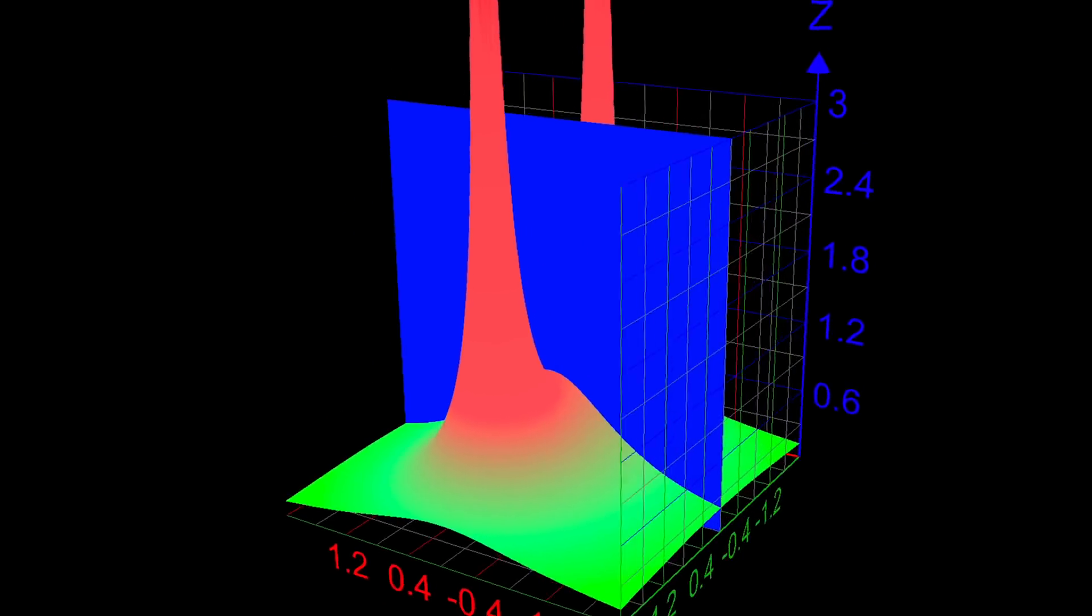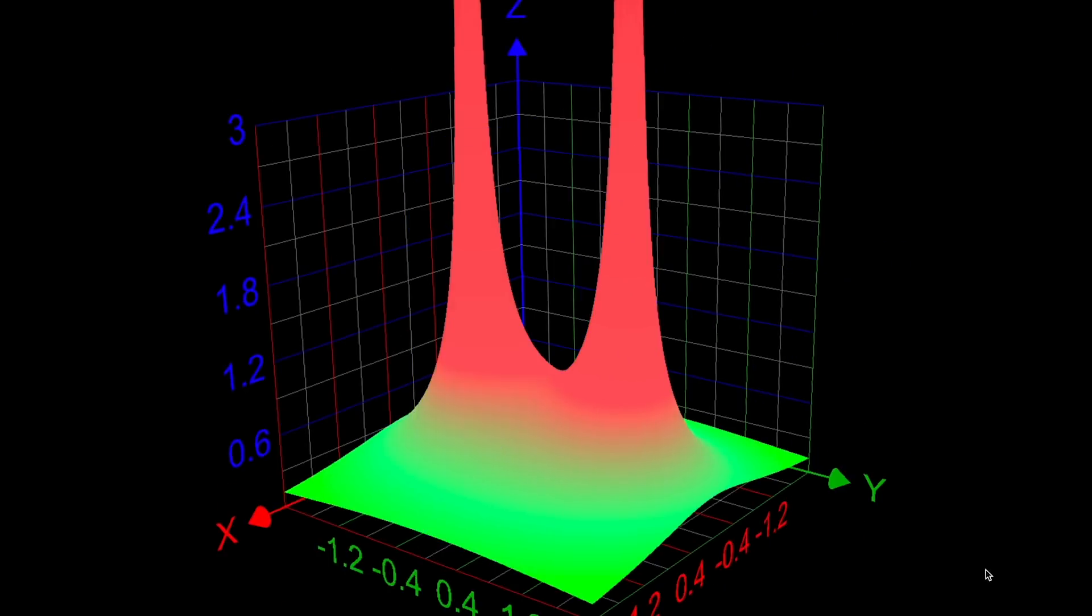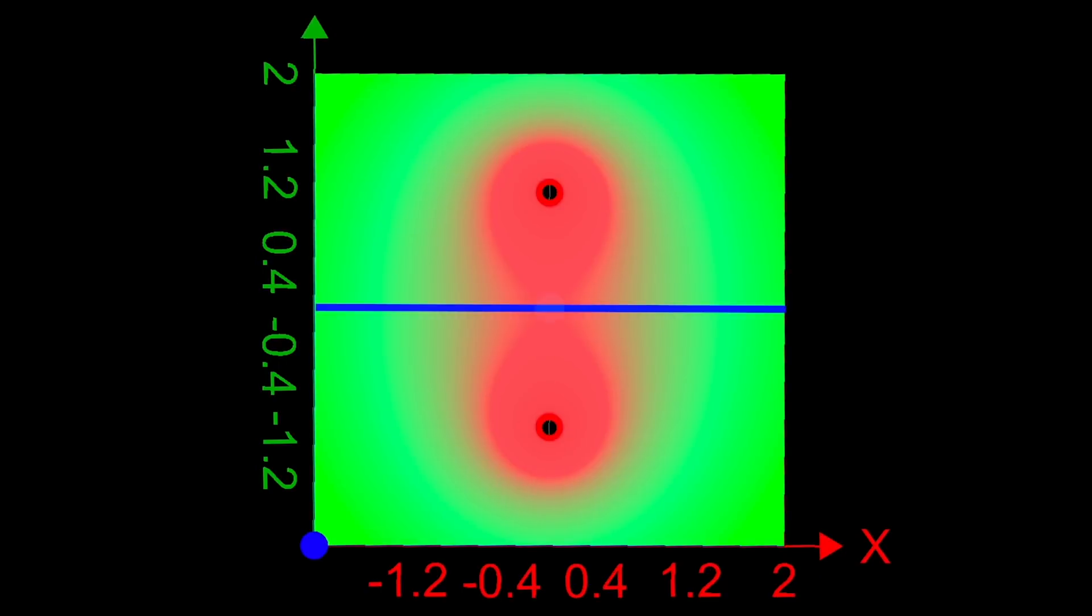So while the radius of convergence can seem random when you restrict yourself to the real number line, since there isn't always something special that happens there, when you include complex inputs, then you can see exactly what's restricting your radius from extending any further.